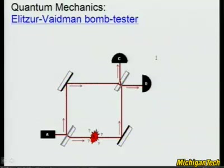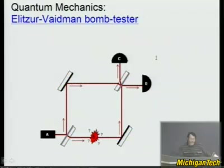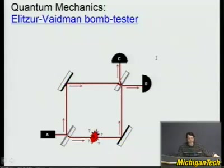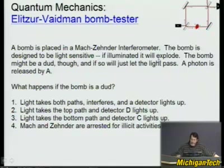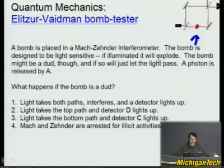This can be used to test for bombs — and I am not making this up. The people who thought of this are Elitzur and Vaidman. They came up with a way of using the Mach-Zender interferometer to test for bombs without exploding them. It sounds like something out of Monty Python. A bomb is placed in a Mach-Zender interferometer. The bomb is designed to be light-sensitive, so it has to be a special kind of bomb. If illuminated, it will explode.